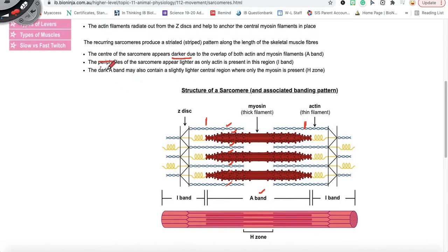The peripheries of the sarcomere appear lighter because only actin is present on the peripheries, and we call that region the I band.